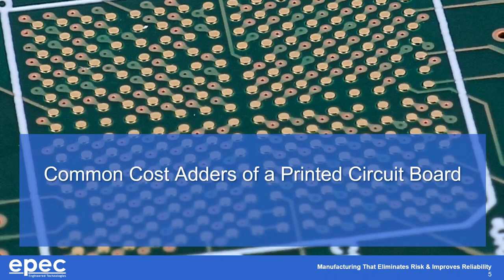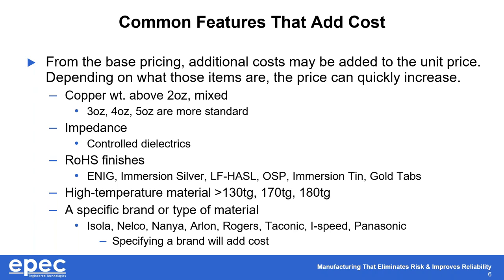Common cost adders that we see more frequently on a PCB have become more common as we've moved toward RoHS-compliant and high-technology PCBs. Some features added to the base price include copper weights above two ounces or mixed copper weights — we see more three, four, and five ounce requests these days. The quantity of PCBs you're ordering is very important for all this pricing. Impedance controls with specified controlled dielectrics are also reviewed against the overall stack-up and thicknesses.